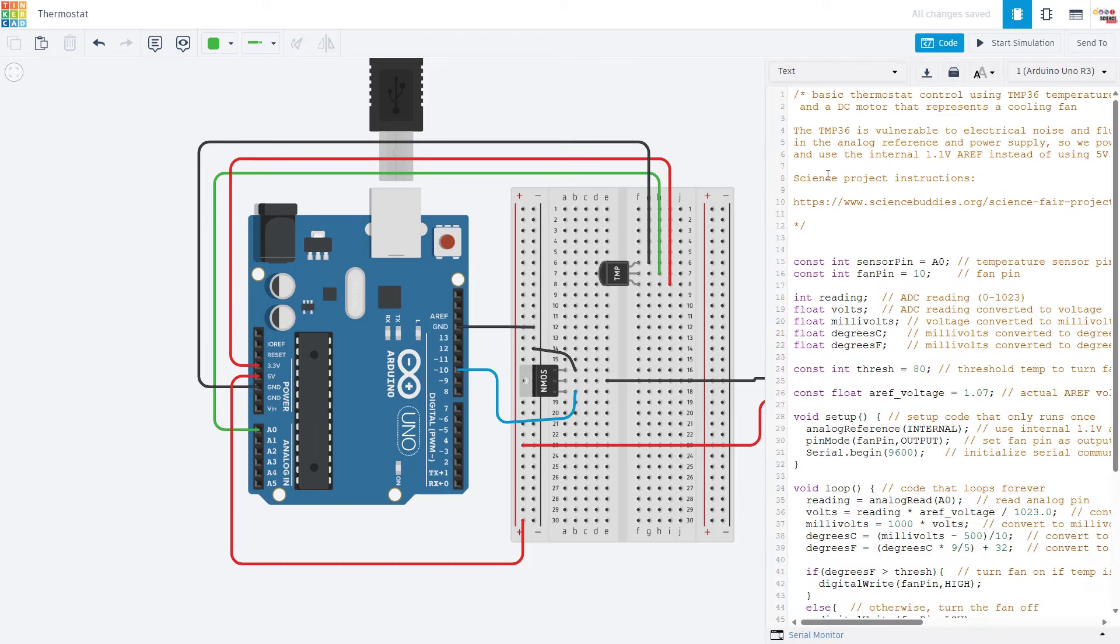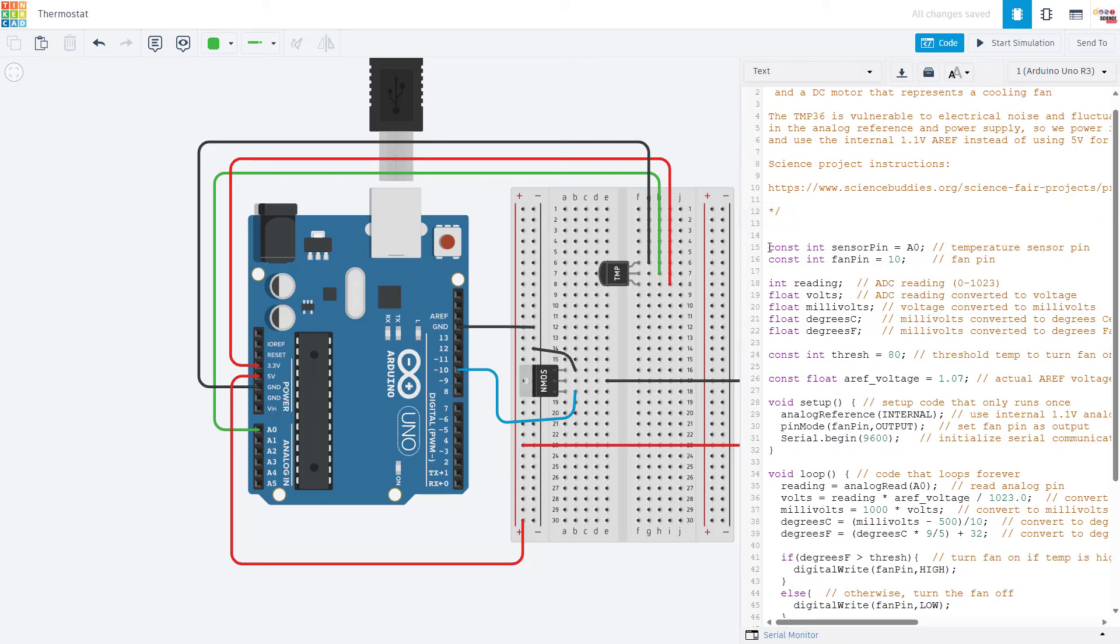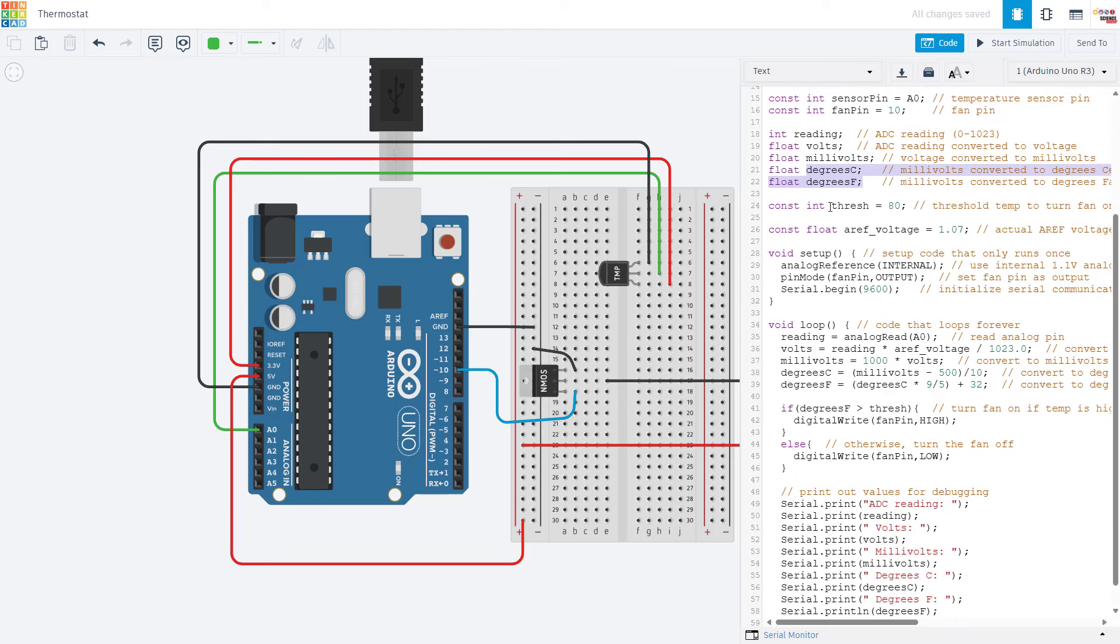Now looking at the code, we will go through this somewhat quickly line by line. We declare constants for the sensor pin and the fan pin. We then have a bunch of variables related to the temperature sensors. First we have the analog to digital converter reading, which is going to be a number between 0 and 1023. We convert that to volts, then millivolts, and then finally degrees Celsius and degrees Fahrenheit. So you can use whichever temperature system you prefer. We have a threshold variable that we are going to use as our set point for the thermostat to turn the fan on and off. And then we have a variable for the analog reference voltage.